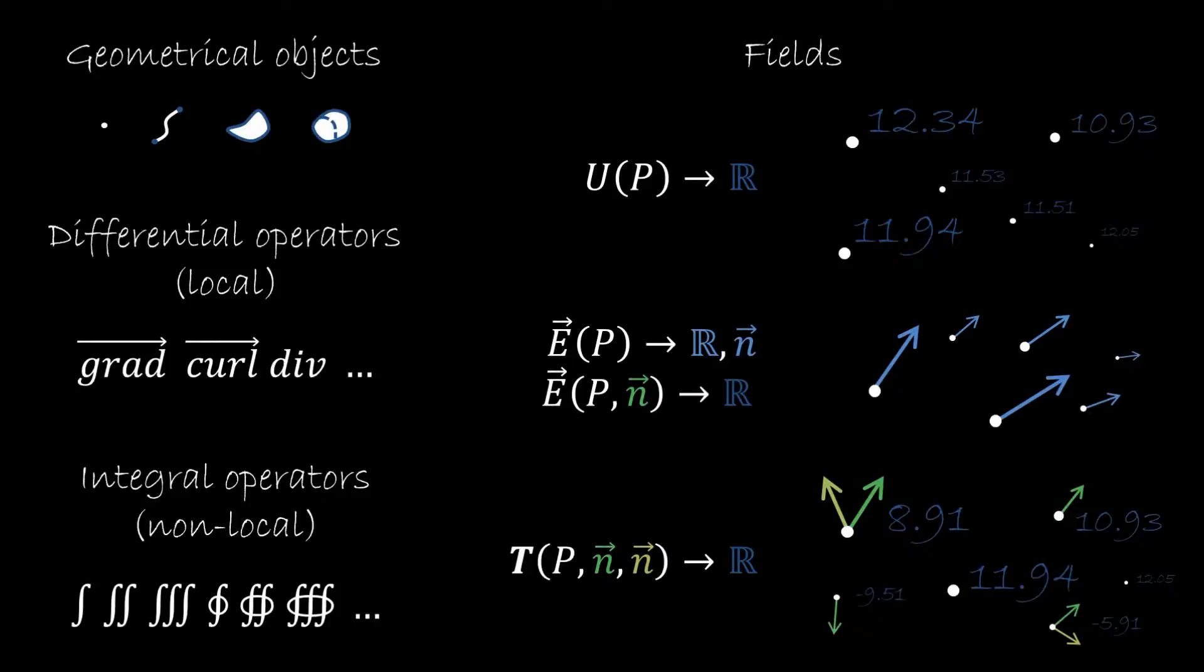On one side, we'll have fields which are essentially functions of a point. So we have a scalar field that, given a point, gives us a value and so each point will have a different value. We'll have a vector field that, given a point, gives us a value and a direction, which is one way to look at vector fields.